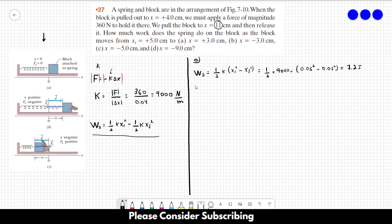That's the answer for part A. For part B, it's the same equation: 1/2 × 9000 × (0.05² - (-0.03)²). This gives us the same answer, 7.2 joules, because we're squaring a negative number, so it becomes positive.